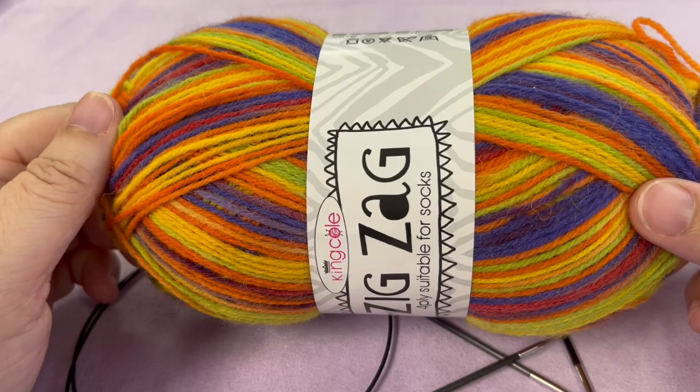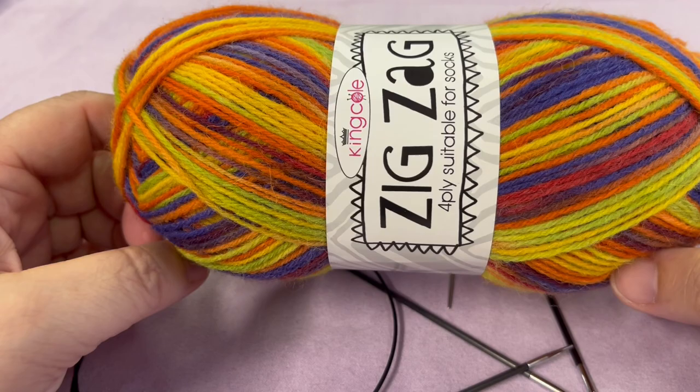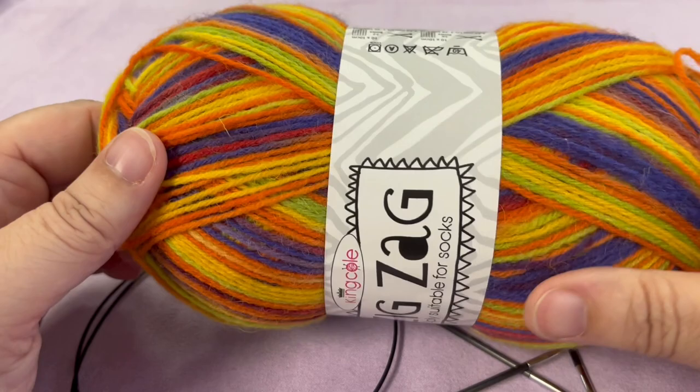This one here is Zig Zag by King Cole. It's available on my website at thevioletunicorn.com. So 100 grams of any sock weight yarn will make the pair of socks for you.